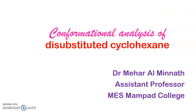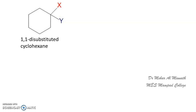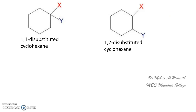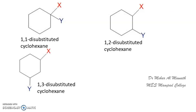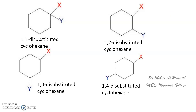We will have a look at the conformational analysis of disubstituted cyclohexanes. In this video we will be particularly discussing about 1,1-disubstituted cyclohexanes. When we take up disubstituted cyclohexanes in general, we can have 4 different classes: 1,1-disubstituted where both substituents are on the same carbon, 1,2-disubstituted, 1,3-disubstituted, and 1,4-disubstituted cyclohexanes.